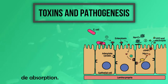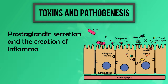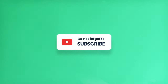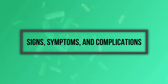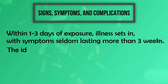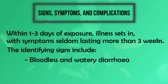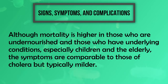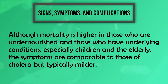Watery diarrhea is one of the outcomes of these alterations. Prostaglandin secretion and the creation of inflammatory cytokines are also stimulated by toxin exposure, leading to further fluid loss. Regarding signs, symptoms, and complications: within one to three days of exposure, illness sets in, with symptoms seldom lasting more than three weeks. The identifying signs include bloodless and watery diarrhea; stomach pains, vomiting, and nausea are less frequent. Mortality is higher in those who are undernourished and those with underlying conditions, especially children and the elderly. The symptoms are comparable to those of cholera but typically milder.